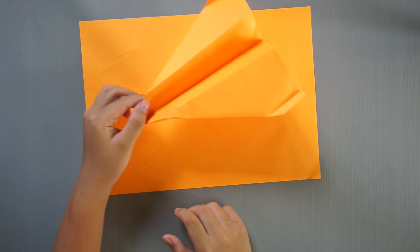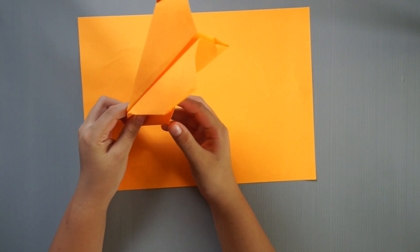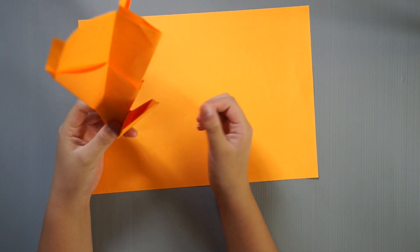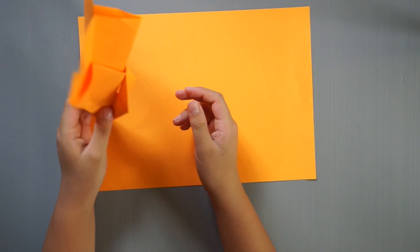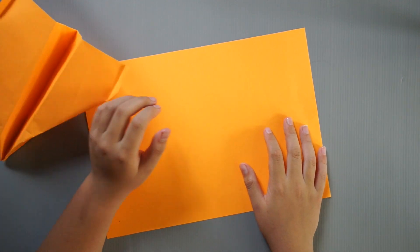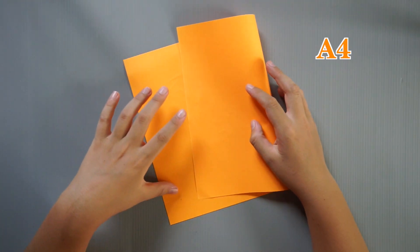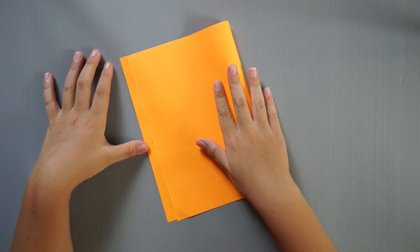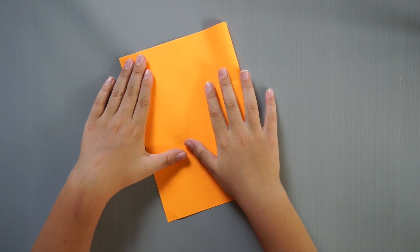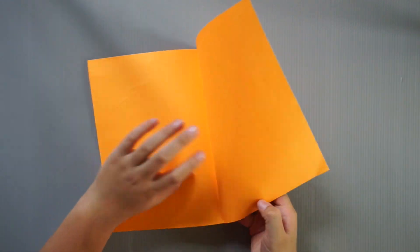This is called the water glider, or water plane, because it could land on water and not get harmed. So first you do this, and then we'll do that.